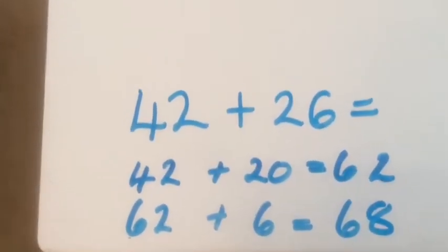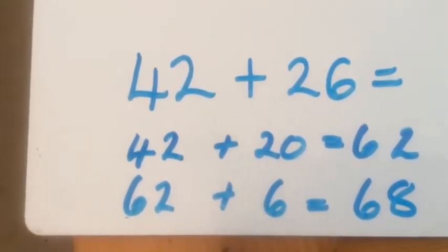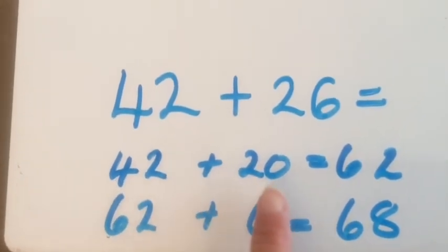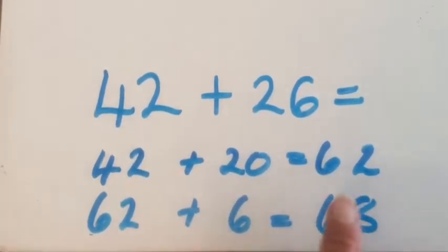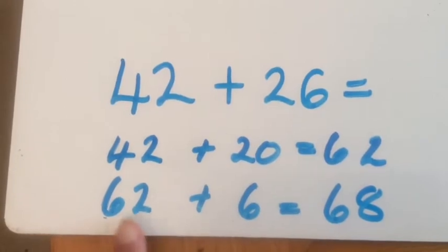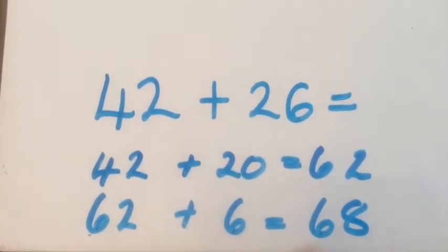Whichever way you chose, this is what you were really doing. You did forty-two add the twenty to give you sixty-two. And then you need to do your sixty-two add your six, which gave you the sixty-eight.